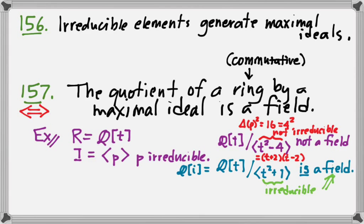So there is a complete link between the maximality of an ideal and the field property of the quotient of the ring by that ideal.